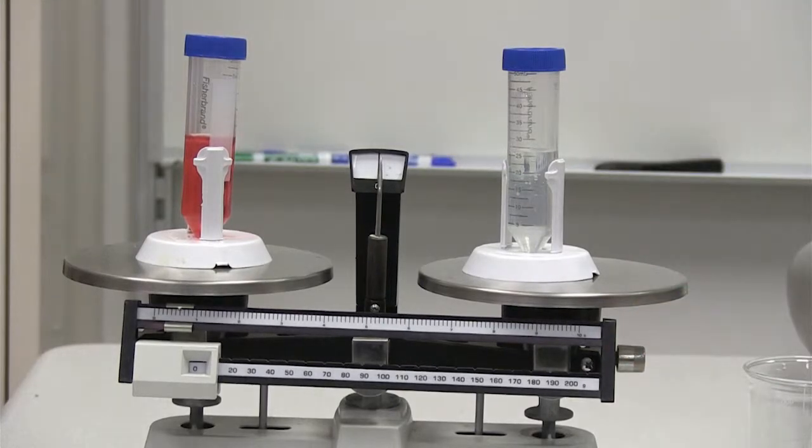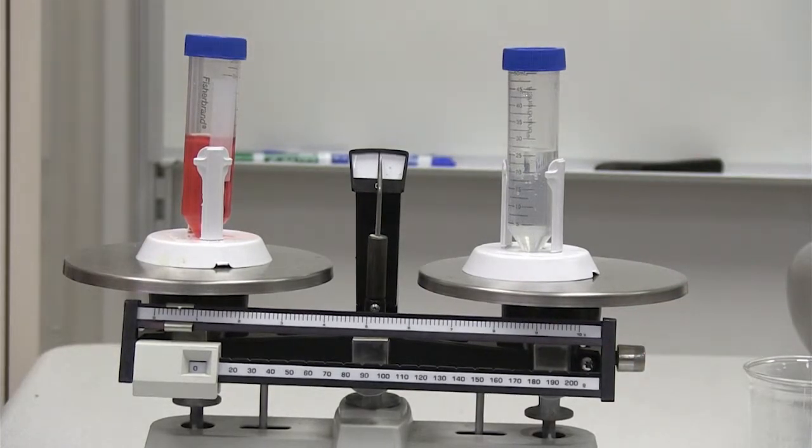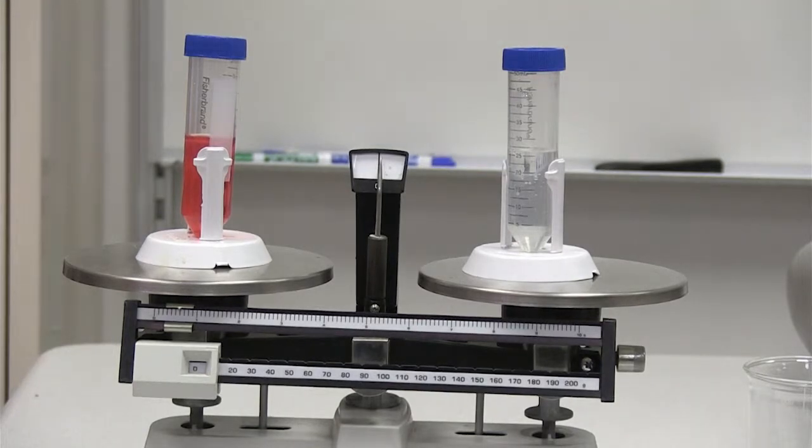You can either do it in the carrier and tube and all that's going in the centrifuge or you can balance the tubes that are going in the carrier.